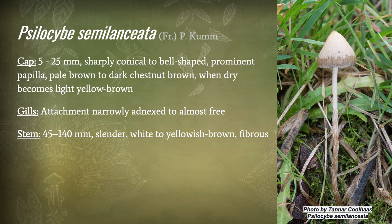Taxonomically speaking, the cap is between 5 to 25 millimeters in diameter, sharply conical to bell-shaped. They have a really prominent papilla — that tiny little nudge at the top of the cap. They are pale brown to dark chestnut brown in colour. These are hygrophanous, so they'll start out dark chestnut brown, then dry to become light to yellow-brown in time, as per the photograph shown here on the right.